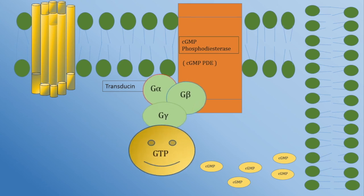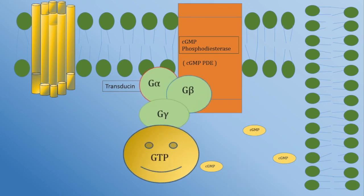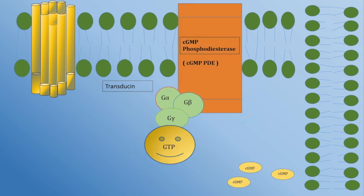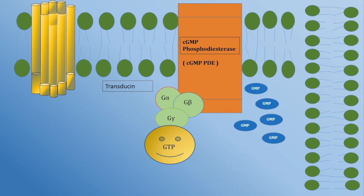With this new energy, the GTP transducin leaves the activated rhodopsin to attach to C-GMP phosphodiesterase, or C-GMP PDE. C-GMP PDE is a special type of protein that can degrade the chemical C-GMP, a second messenger, into the form GMP.